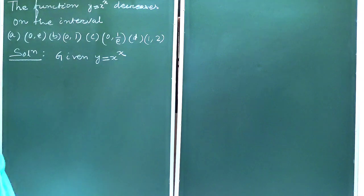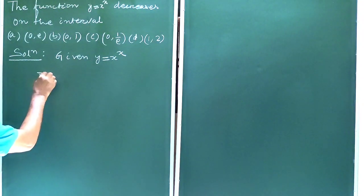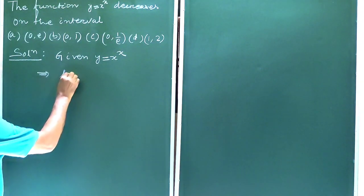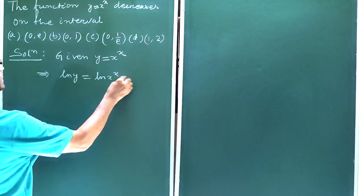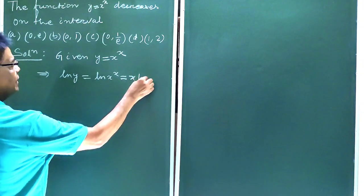Given y equals x to the power x. This implies ln y equals ln of x to the power x, which is equal to x ln x.